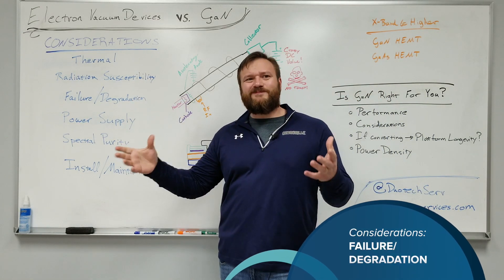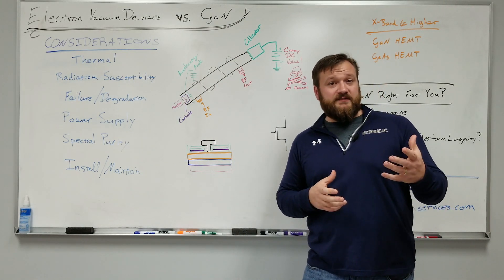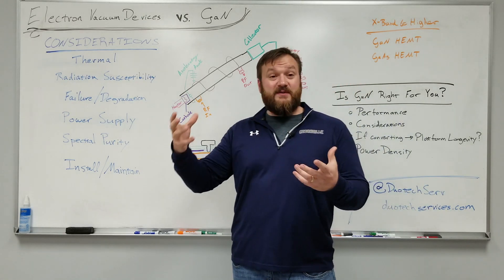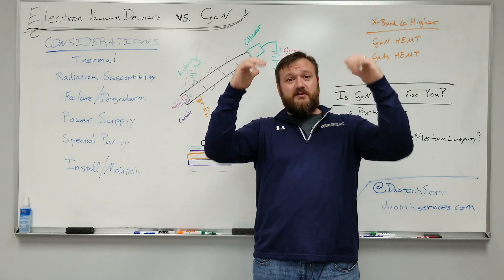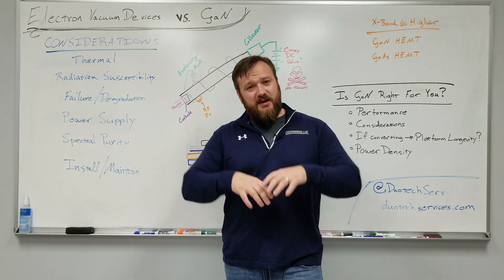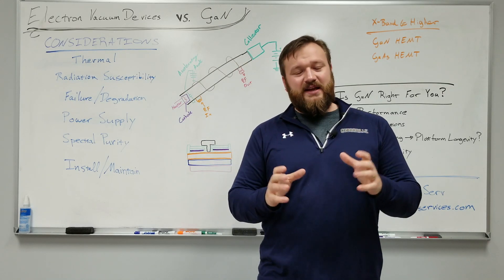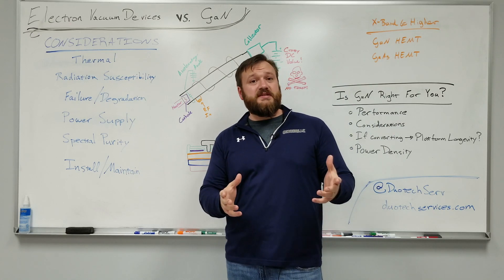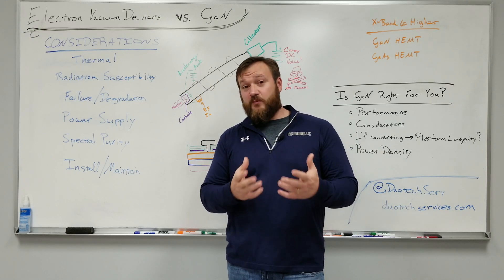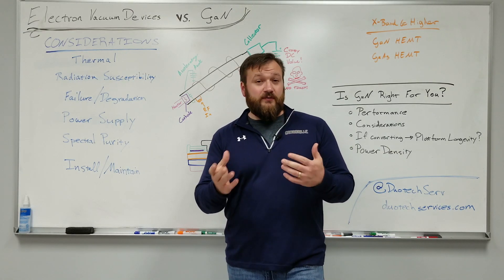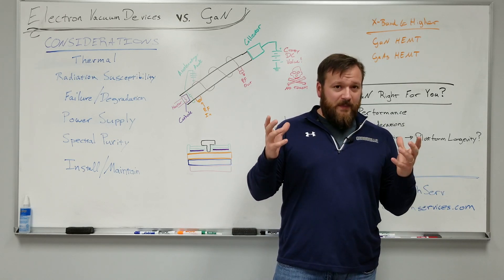Also, failure and degradation. With tubes, you've got to worry about the bias voltages — in a TWT, your cathode voltage, your grid voltage — making sure your cathode brings up your peak amount of amplification, and making sure your grid and passband don't distort that passband's flatness across frequency. When the tube has an out-of-spec voltage, you're going to have problems. When the tube goes, you're faulted — it's gone. You have no more power amplifier device.